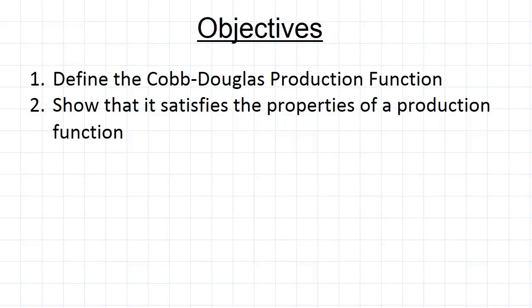So understanding generally how production functions work, we can now move on to a specific production function. We're going to look at the Cobb-Douglas production function and we're going to show in this video that it satisfies the properties that we said a production function should have.